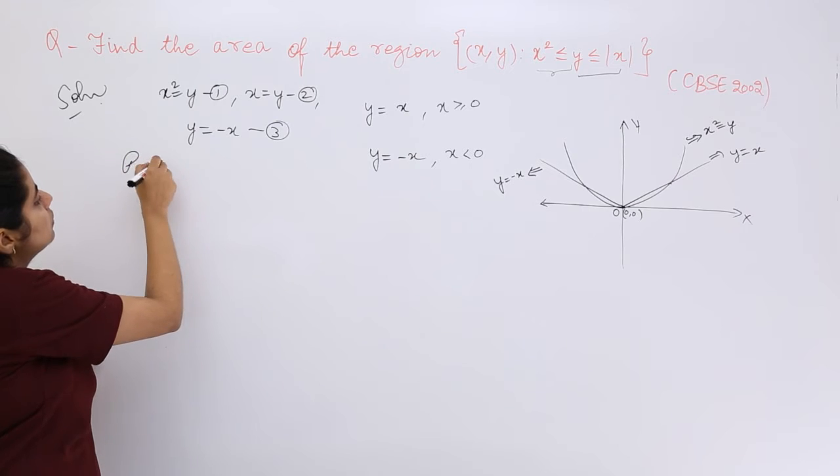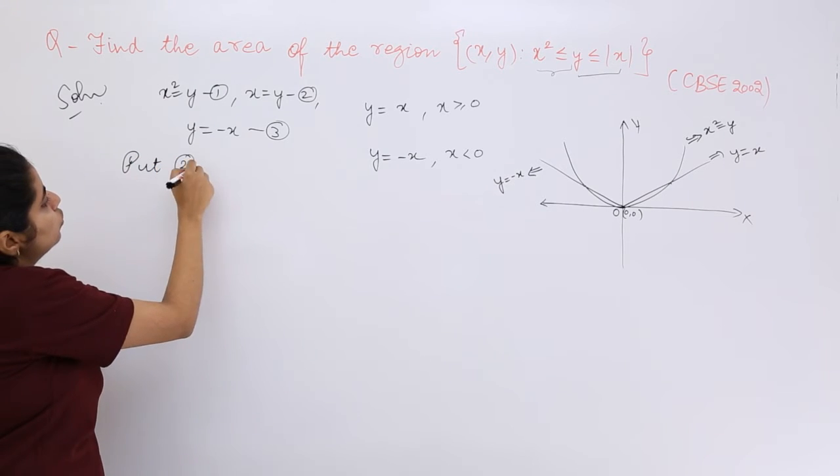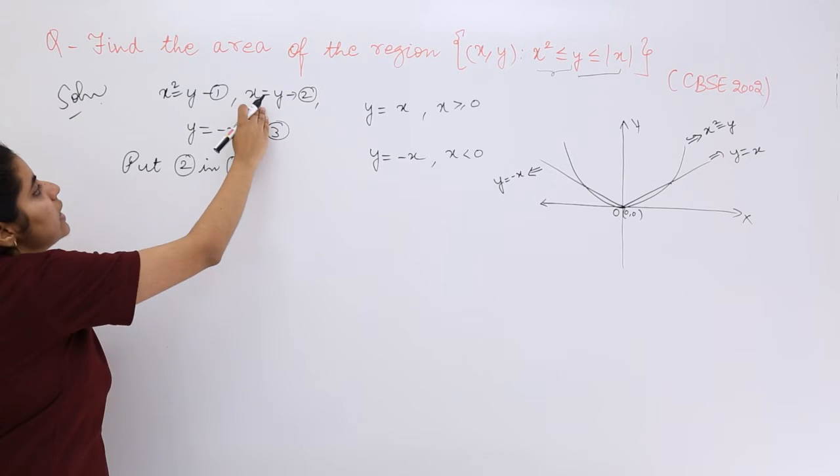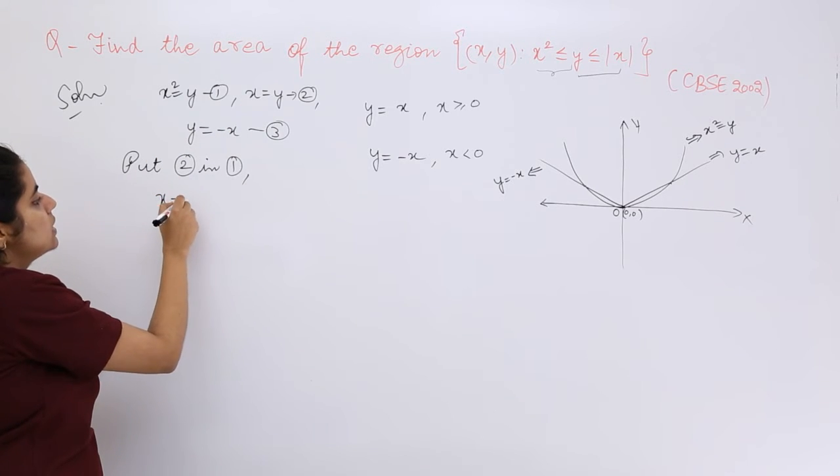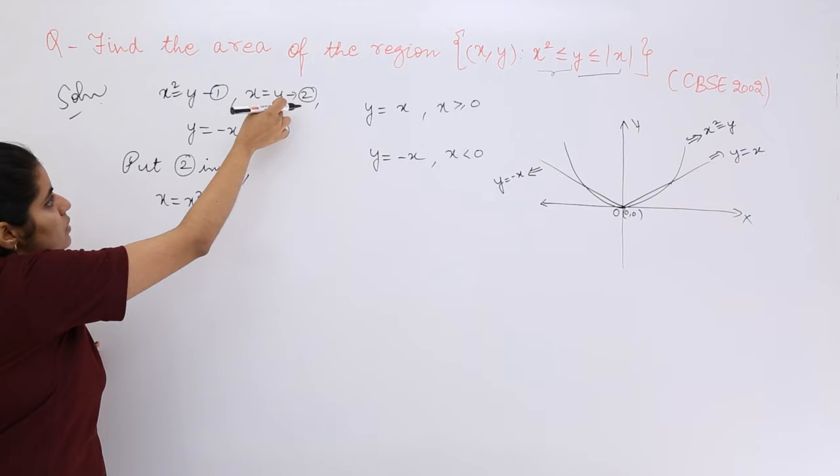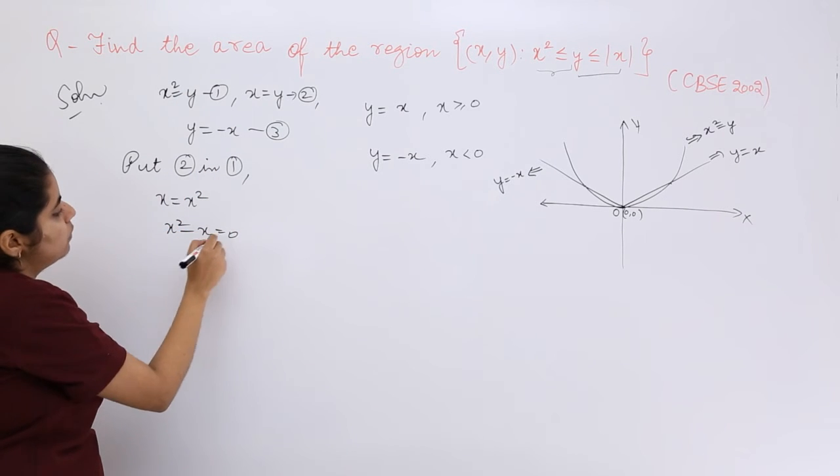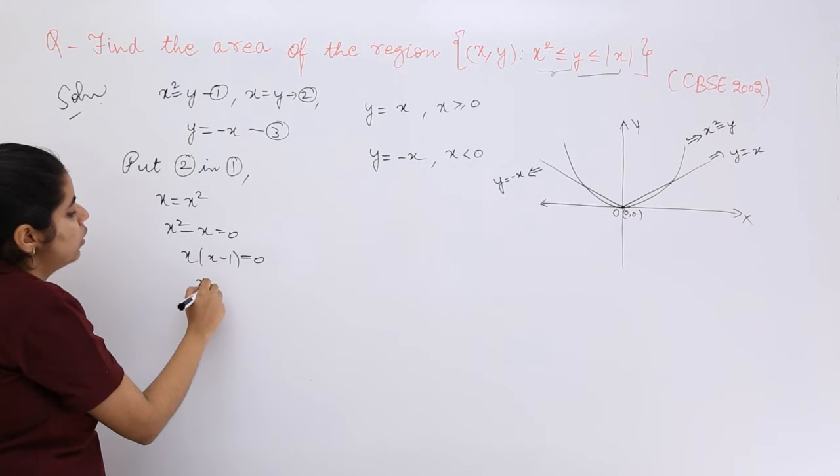Let me put 2 in 1. So x = y means x = x² because y is substituted by x, or x² - x = 0, or x(x - 1) = 0, so x = 0 and 1.